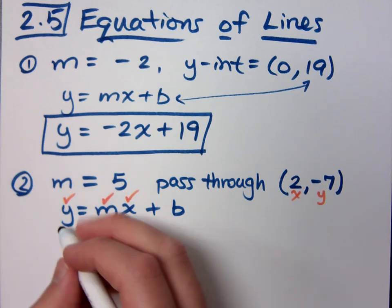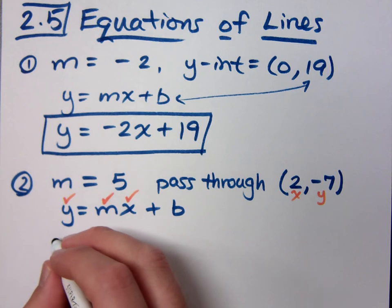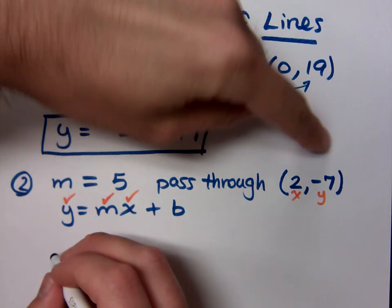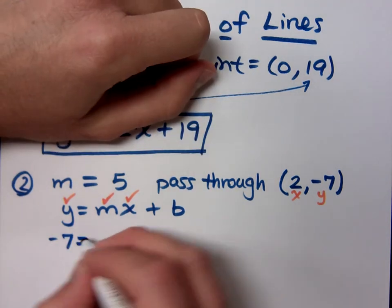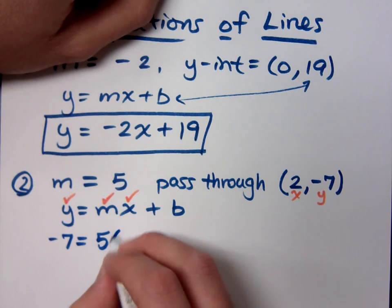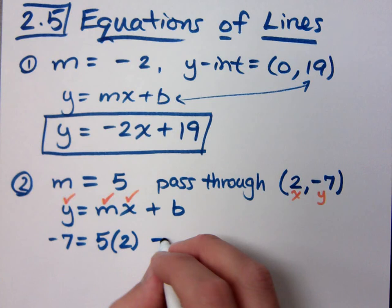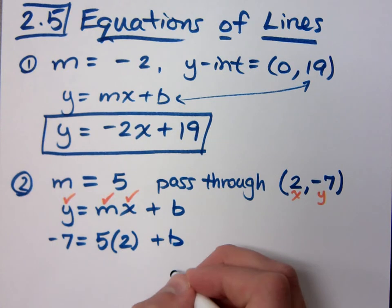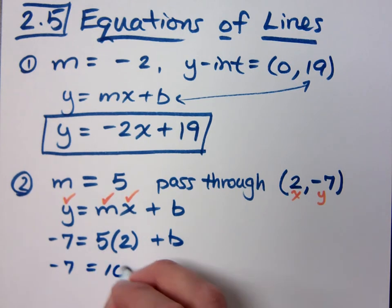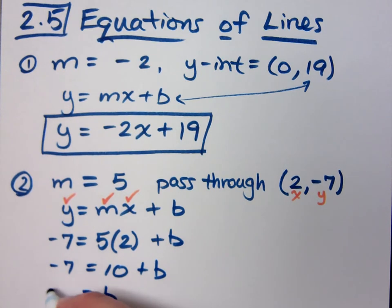It's y. It's negative. No, no, no, no, no. You're going to replace the y with negative 7. Right. Equals your 5x, or 5 times the parentheses x. 5 times 2 plus b. See, I plug in everything that I know. I just don't have the b. Negative 7 equals 10 plus b, which means b equals what? Negative 17.